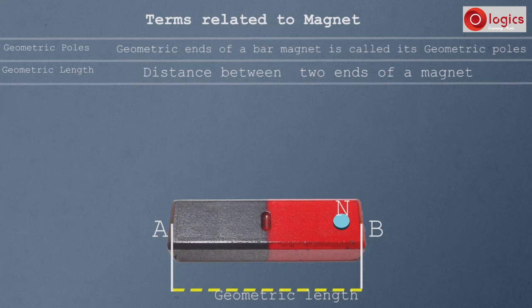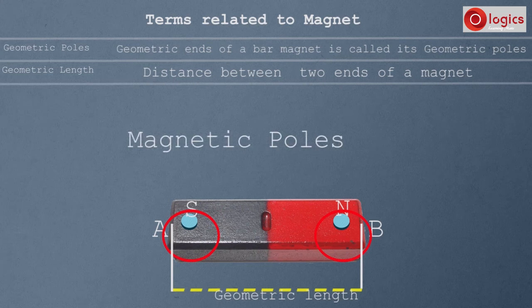This is the magnetic pole north and this is the magnetic pole south. These are magnetic poles of magnet.